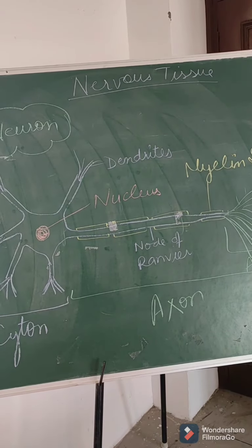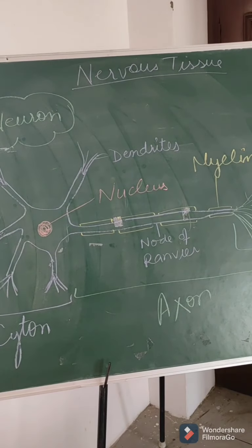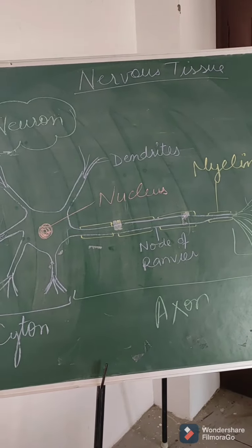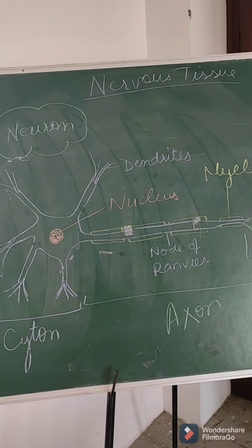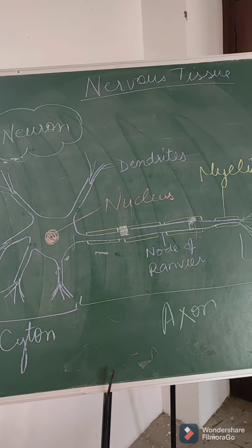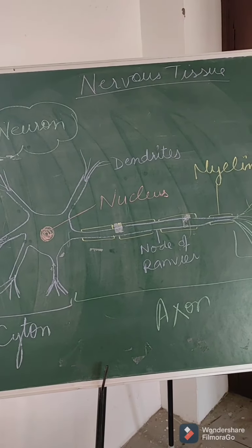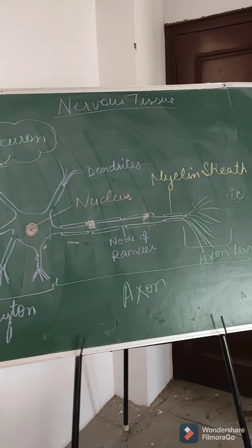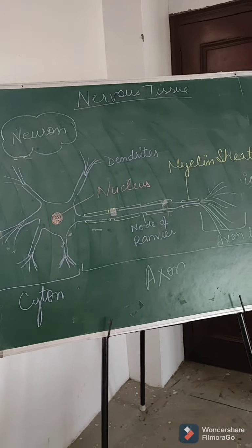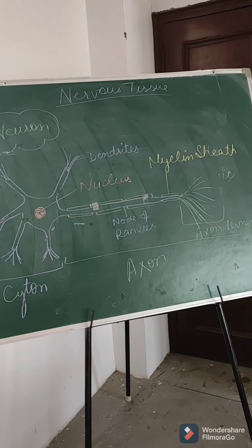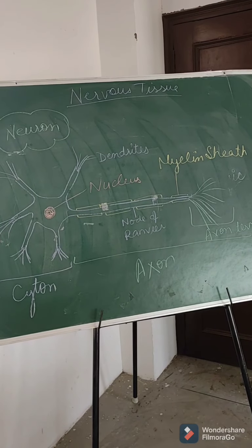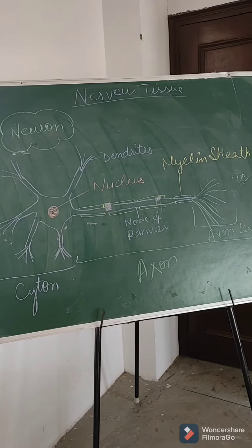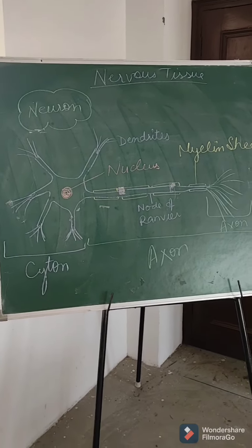Nervous tissue helps in transporting messages from one part of the body to another. Due to this system we are sensitive to different stimuli — we can smell, we can taste, we can feel something. So with this, our chapter ends here. Must prepare your chapter properly and do exercises on time. Thank you, students.